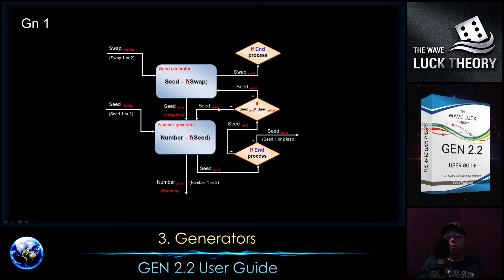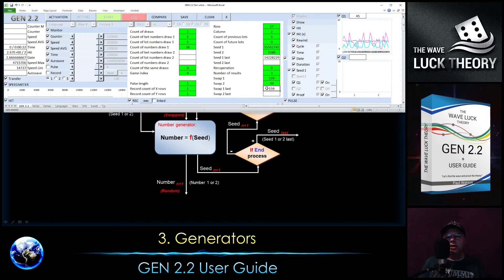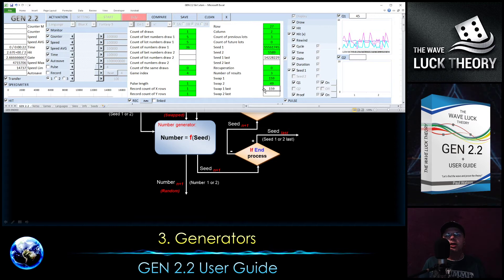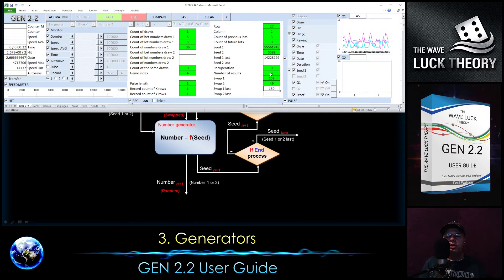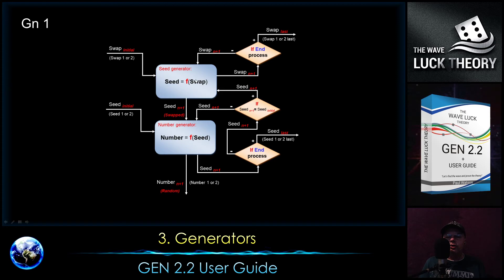If we end the process, the swap is also stored like the seed number — we can see it here. In this case it's the same because the swap number was not changed yet, as it was not needed. As I said, it can change very rarely, after millions of cycles, so here we are still keeping the same swap number. When it's not ended and it needs to be changed, then it will change the swap number if necessary. And that's the principle of generator number 1.